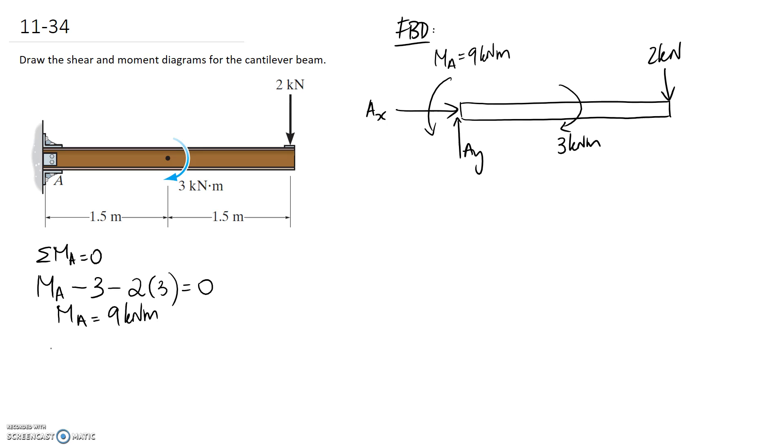So I can now sum forces in the y direction to be zero. I'm going to have AY minus two has to be zero, so that's pretty easy. AY has to be two kilonewtons, and if I sum in the x direction I've actually got no forces in the x direction other than my reaction so it's just going to be zero.